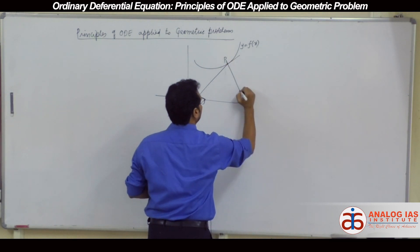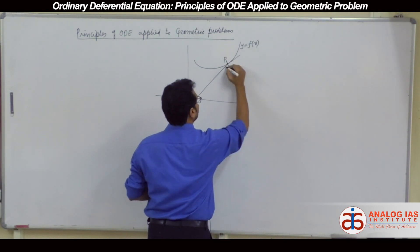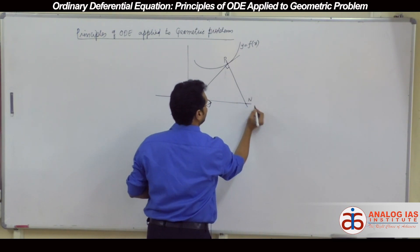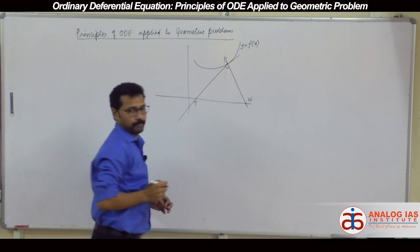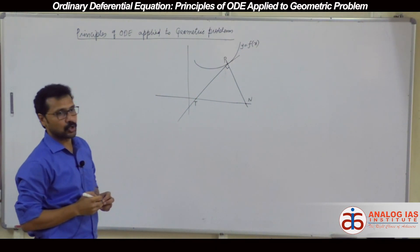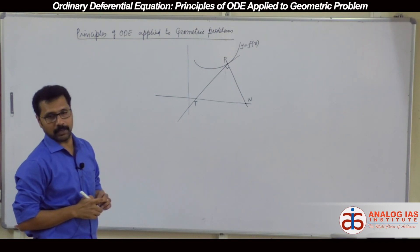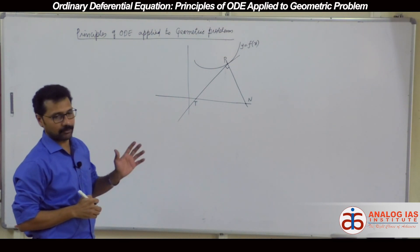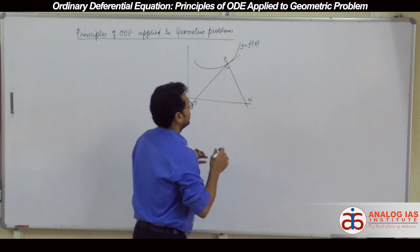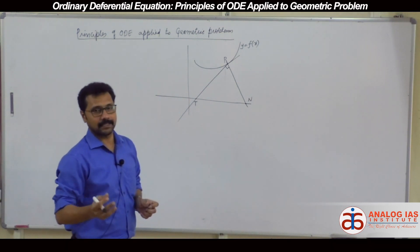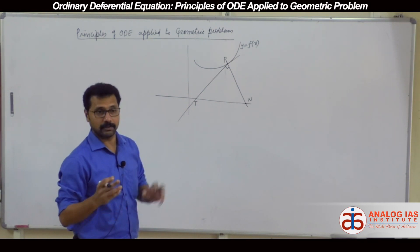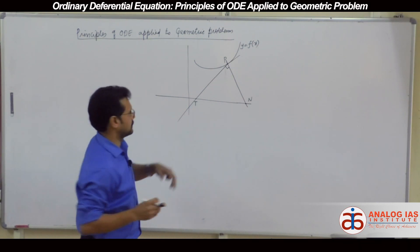Similarly, suppose if I draw a normal at that point — this is 90 degrees. The normal intersects the x-axis at a point, then PN is called length of normal. The lines' intersection with the x-axis is what we are looking at, not with the y-axis; it's all about the x-axis.